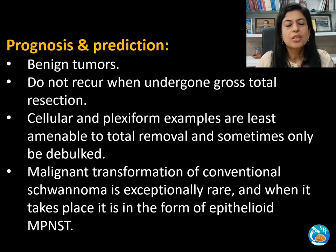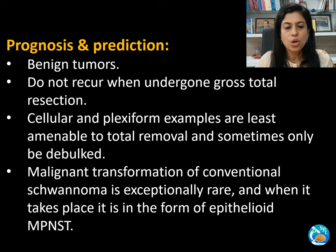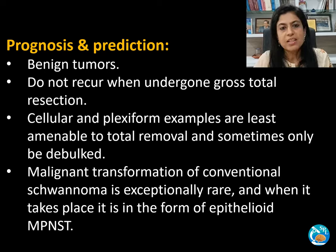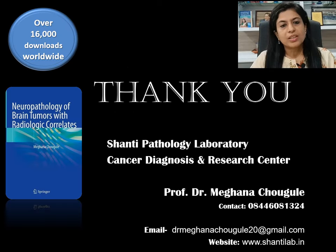Regarding prognosis and prediction: schwannomas are benign slow-growing tumors and do not recur when gross total resection is performed. Cellular and plexiform schwannomas are least amenable to total removal and sometimes can only be debulked. Malignant transformation of conventional schwannoma is extremely rare, and whenever it takes place, it is in the form of epithelioid MPNST. Thank you so much.